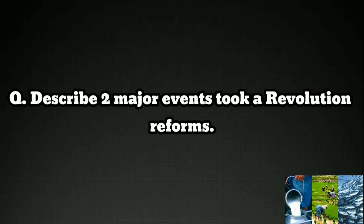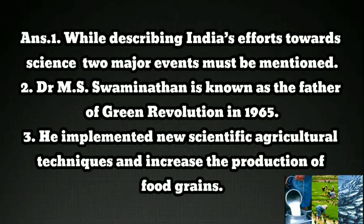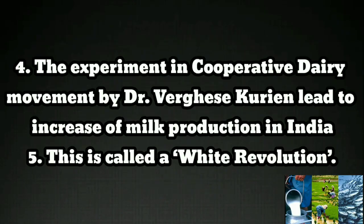Question: Describe two major revolutionary reforms. Answer: While describing India's efforts towards science, two major events must be mentioned. Dr. M.S. Swaminathan is known as the father of the Green Revolution in 1965. He implemented new scientific agricultural techniques and increased the production of food grains. The experiment in cooperative dairy movement by Dr. Varghese Kurian led to an increase in milk production in India. This is called the White Revolution.